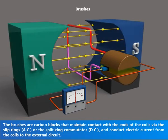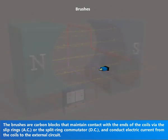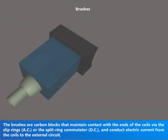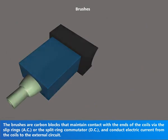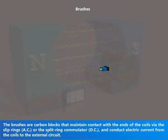The brushes maintain contact with the ends of the coils via the slip rings (AC) or the split ring commutator (DC), and conduct electric current from the coils to the external circuit.